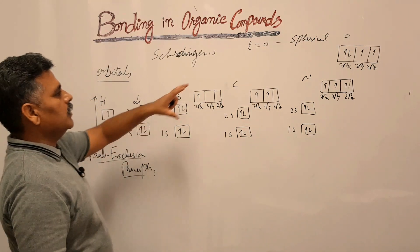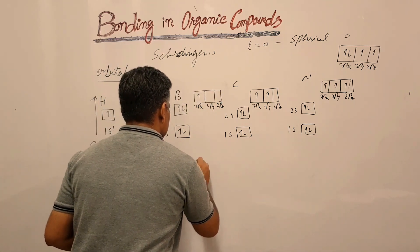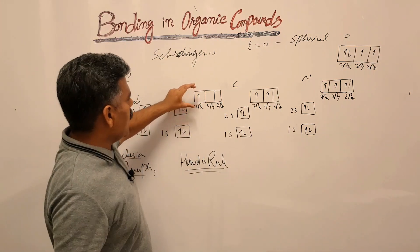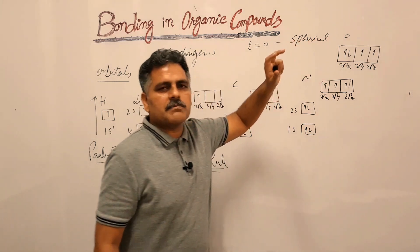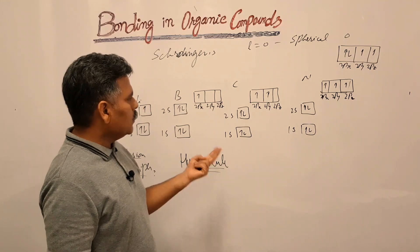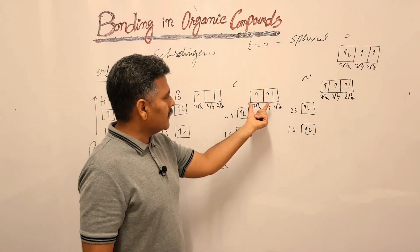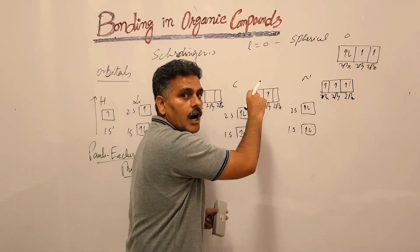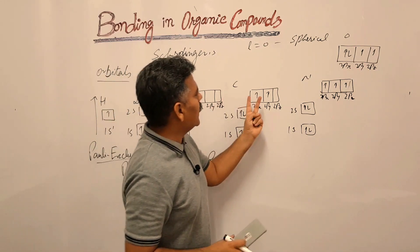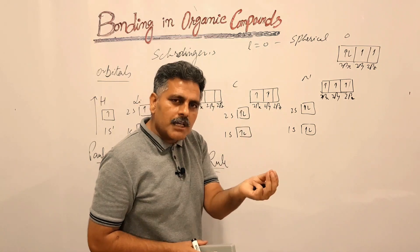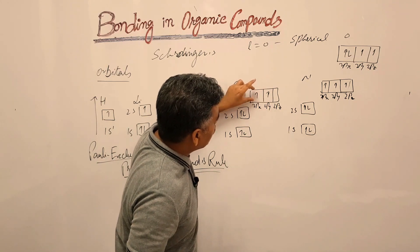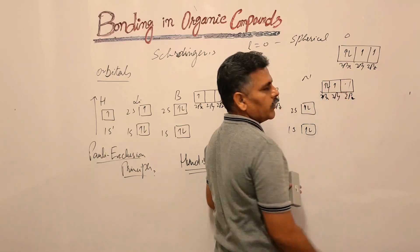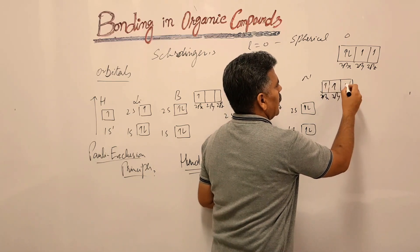The second rule followed in distributing electrons is Hund's rule. Hund's rule describes the distribution of electrons in degenerate orbitals. If electrons are available to occupy degenerate orbitals, they occupy separate orbitals with the same spin instead of the same orbital with opposite spin. So electrons first occupy separate orbitals with the same spin.